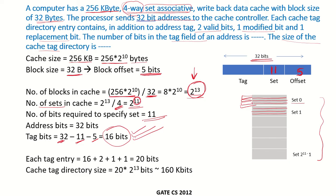Apart from these tag bits, there are 2 valid bits, 1 modified bit, and 1 replacement bit. So the total number of bits in each tag entry is 20 bits. Since this tag is associated with each block (not each set), and the number of blocks in the cache is 2 to the power of 13, the total tag directory size is 2 to the power of 13 multiplied by 20, which gives approximately 160 kilobits.